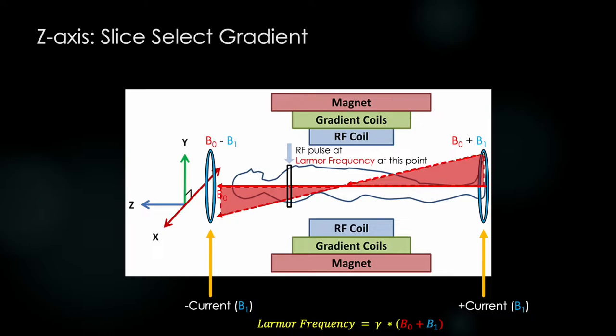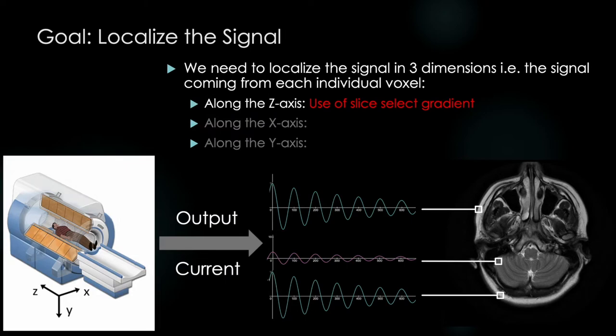And thus linearly varying Larmar frequency via the formula below. We then simply needed to tune our radio frequency pulse to the Larmar frequency corresponding to our slice of interest, energizing only that slice within the body, and ensuring our receiver coil will only record signal coming from that slice.